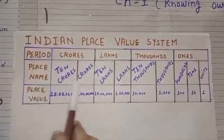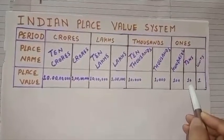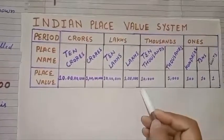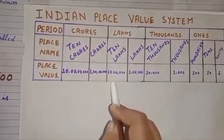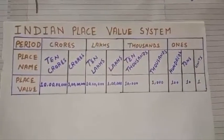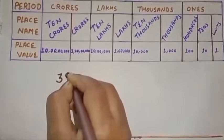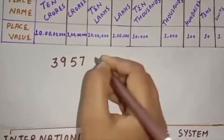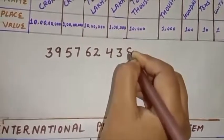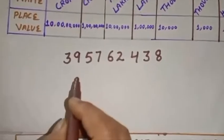The place values are: units = 1, tens = 10, hundreds = 100, thousands = 1,000, ten-thousands = 10,000, lakh = 1,00,000, ten-lakh = 10,00,000, crore = 1,00,00,000, and ten-crore = 10,00,00,000. To illustrate this, let's take the example number 3,95,76,24,38.